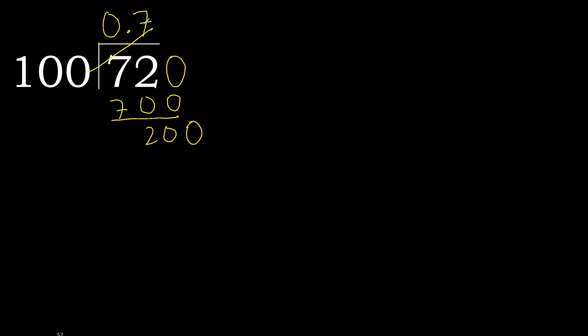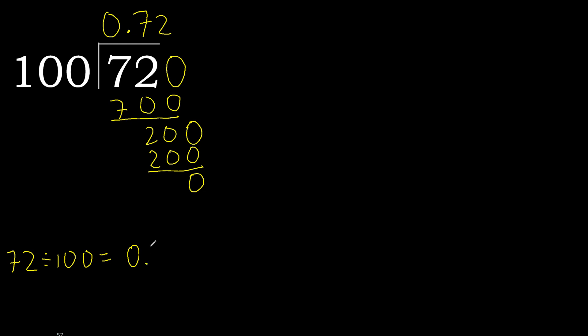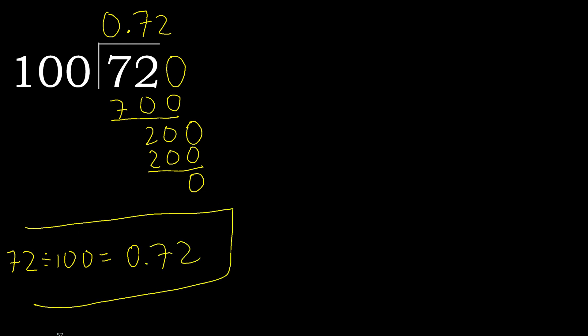200. 100 multiplied by 2 is 200, which is not greater. Subtract 0 — therefore finish. 72 divided by 100 is 0.72. Ok, thank you.